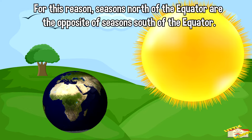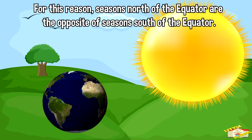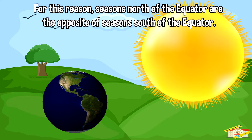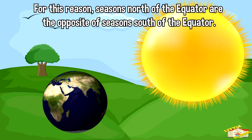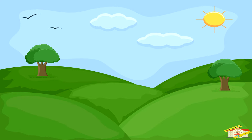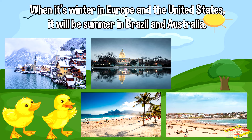For this reason, seasons north of the equator are the opposite of seasons south of the equator. When it's winter in Europe and the United States, it will be summer in Brazil and Australia.